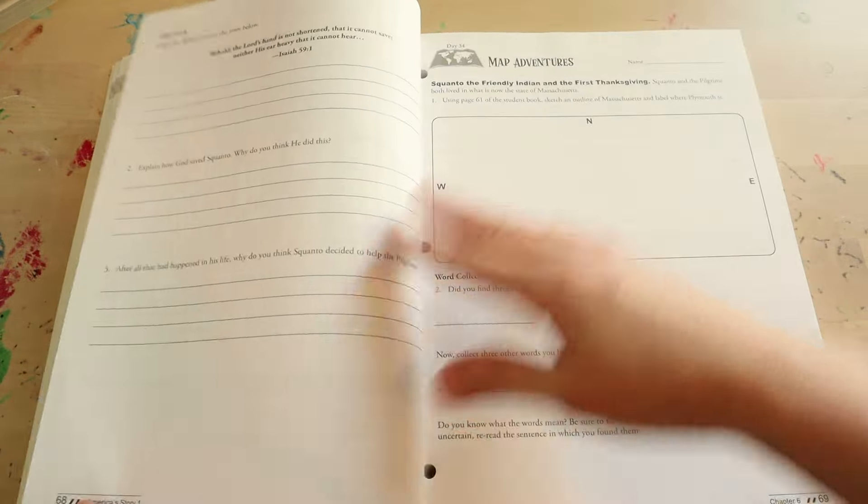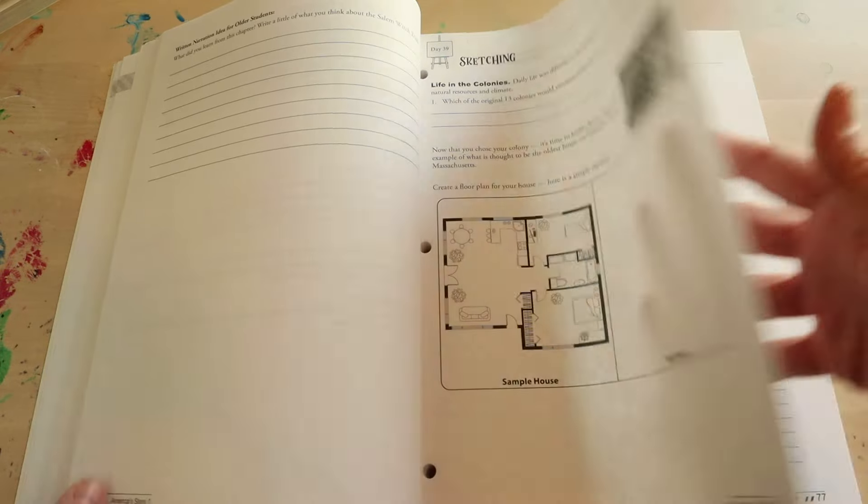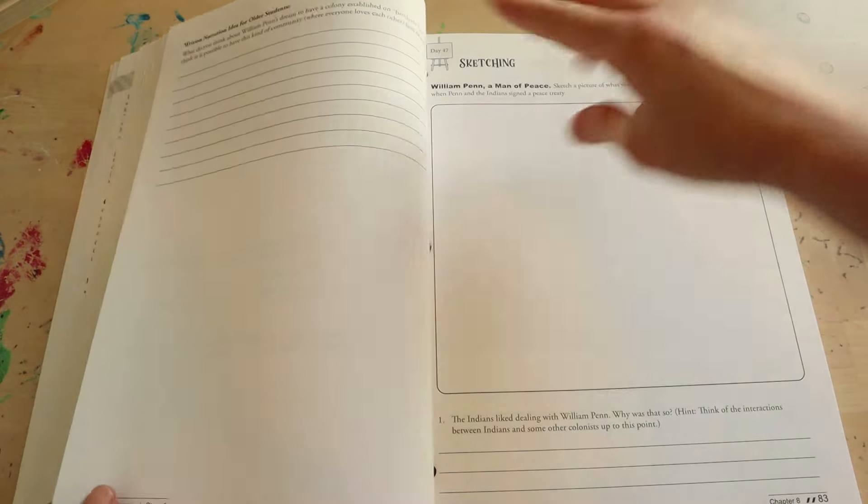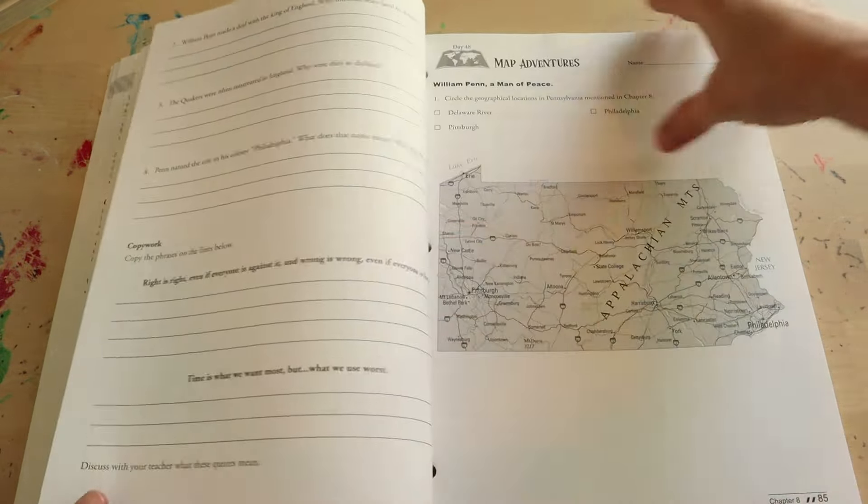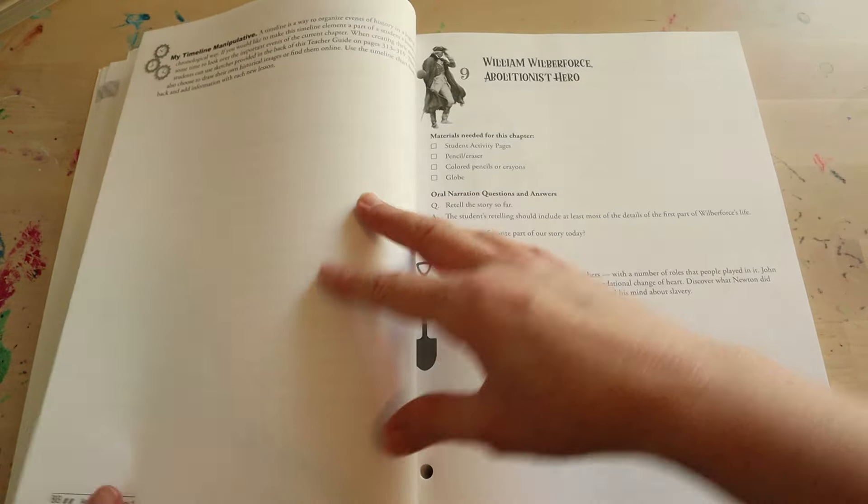Within this book, as you can see, you're going to get all of your daily lessons, supply lists, ideas for additional study, suggested reading ideas, and an answer key. Now in the student guide, the one that I just showed you previously, you're going to spend about one to one and a half weeks covering a chapter.